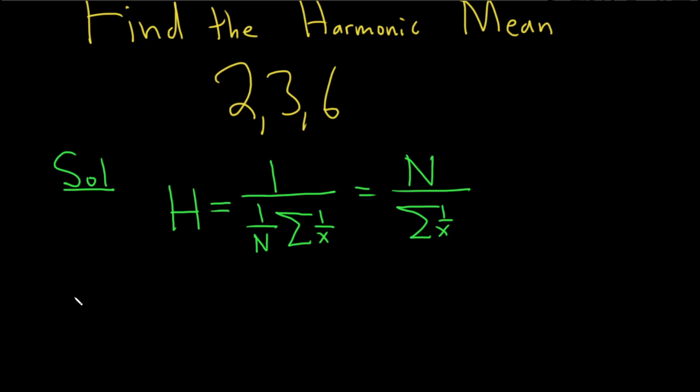Okay, let's apply this formula to our particular data set here. So we have H, that's equal to n. So n is the total number of data we have. So here we have three numbers, so n is 3. This is over,